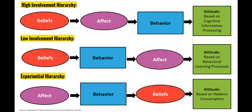Low-involvement hierarchies, on the other hand, are impulse buys. We have a set of beliefs that immediately leads to behavior. Our belief that at 3 o'clock in the afternoon we want a snack leads us to purchase a candy bar, and then our affect is positive or negative based on whether we feel better after eating it. Our attitudes in this situation are based on behavioral learning processes — basic stimulus and reward. If we eat a candy bar and feel more energized, our attitude is that we like candy bars.